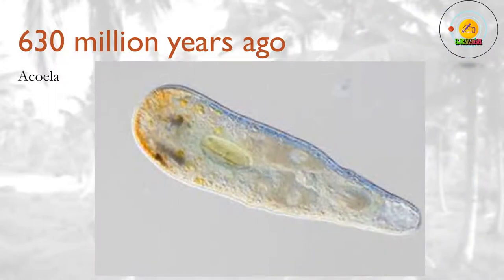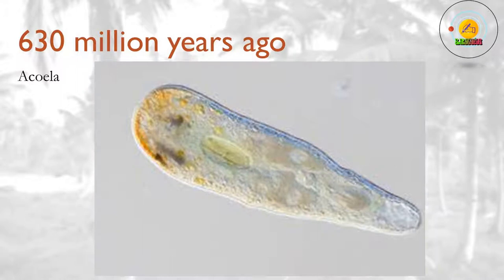630 million years ago? Around this time, some animals evolved bilateral symmetry for the first time — that is, they now have a defined top and bottom, as well as a front and back. Little is known about how this happened. However, small worms called acoela may be the closest surviving relatives of the first ever bilateral animal. It seems likely that the first bilateral animal was a kind of worm. Vernanimalcula guizhouena, which dates from around 600 million years ago, may be the earliest bilateral animal found in the fossil record.